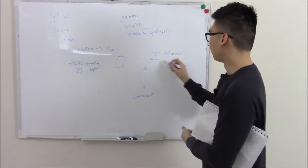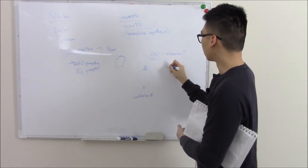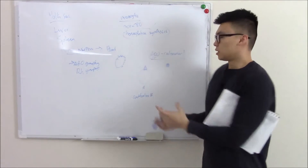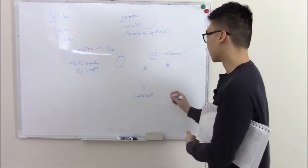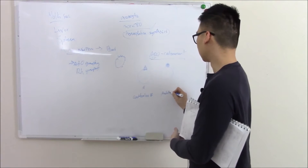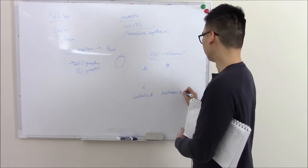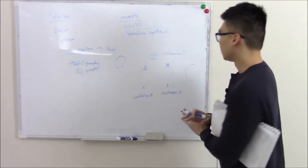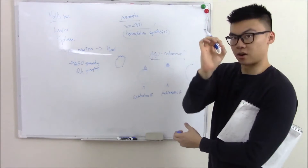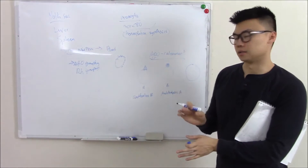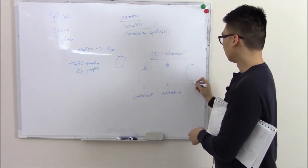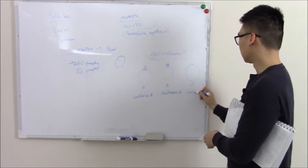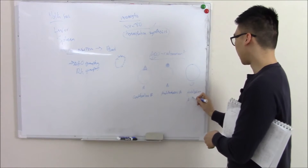If you have B blood, you'd have the B antigen, and you have antibodies against everything else — antibodies against A. And if you have O blood, I always think of O as in zero. You actually have no AB antigens — it's a clean slate. Therefore, you're going to have antibodies against both A and B.